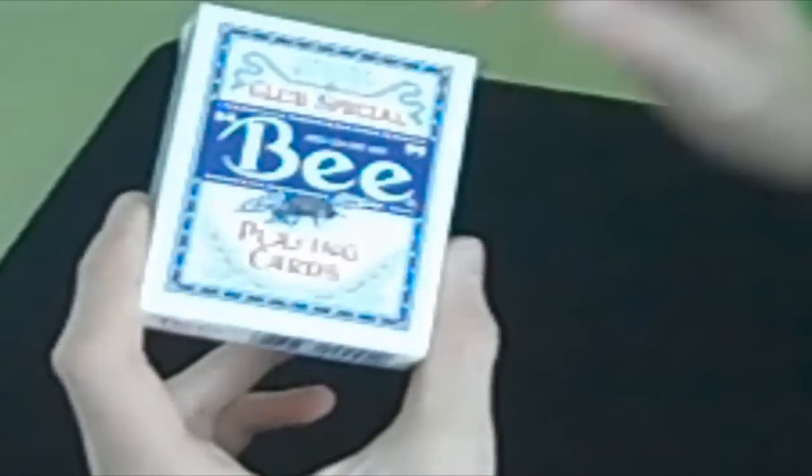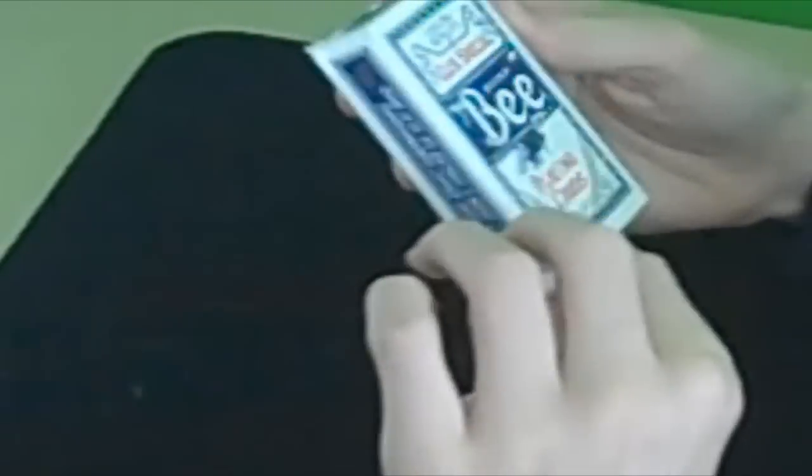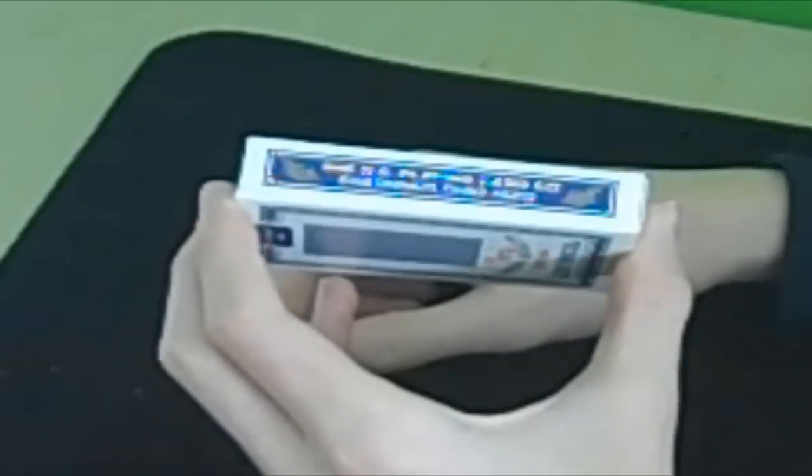The box says casino quality club special bee playing cards with a cool little gold bee emblem. I really like the front of this box, it looks really nice. The US Playing Card Company, Cincinnati, Ohio on that side. Diamond back, club special.